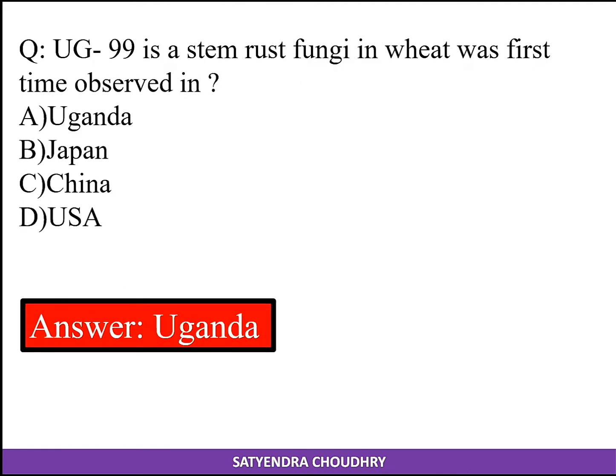UG 99 is a stem rust fungus in wheat, and was first observed in Uganda.